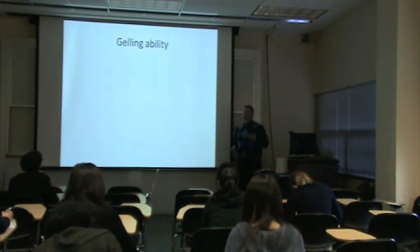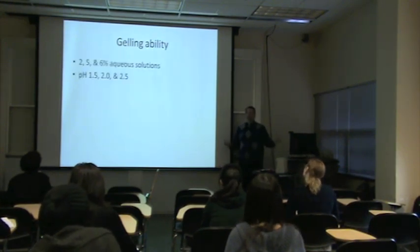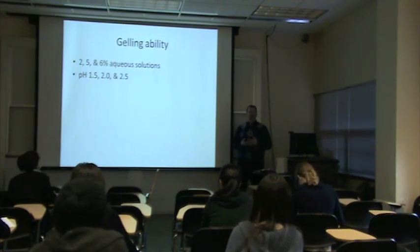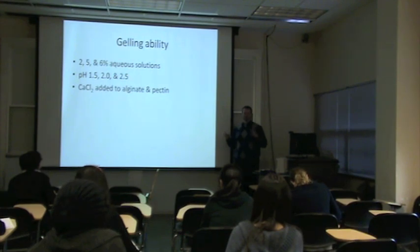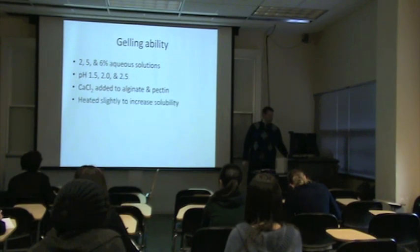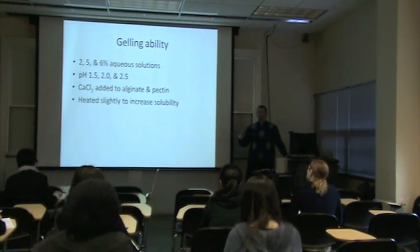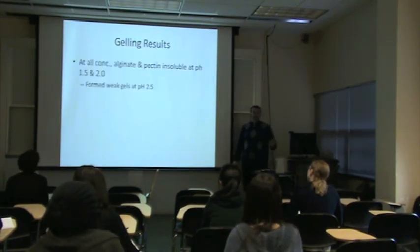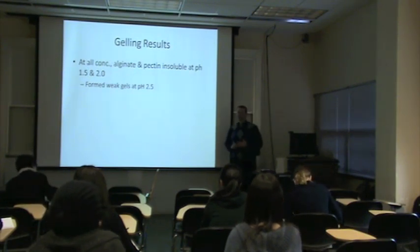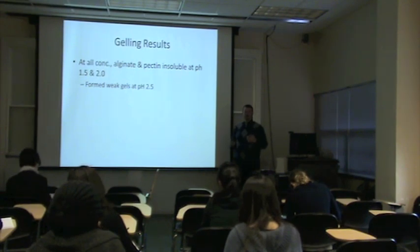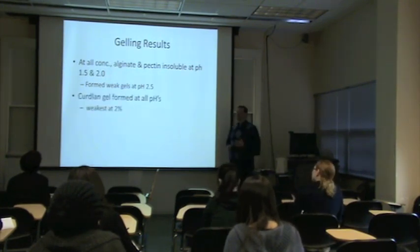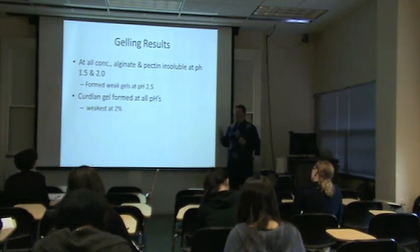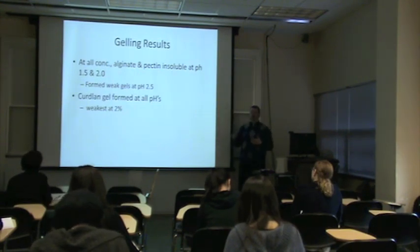We needed to identify the gelling ability of our three polysaccharides, so we tested 2%, 5%, and 6% solutions. pH was very important because, as stated earlier, if you want a vibrant red color from your anthocyanins, you need to stay below pH 3 — so we looked at pH 1.5, 2, and 2.5. For alginate and pectin, you have to add calcium chloride for them to form a gel; we heated slightly to increase solubility, but you have to be careful not to overheat and degrade the anthocyanins. We found that at pH 1.5 and 2, both pectin and alginate were insoluble regardless of concentration. At pH 2.5 they were soluble but the gel formed was very weak. Curdlan, however, formed a gel for all concentrations and pHs, with the 2% concentration producing only a weak gel — so we want to go with something higher, in the 4 to 6% range.